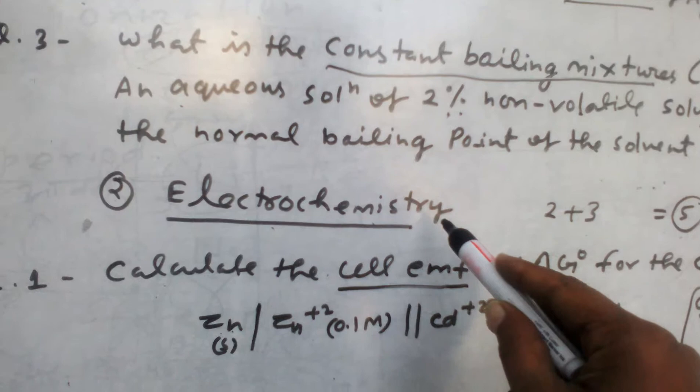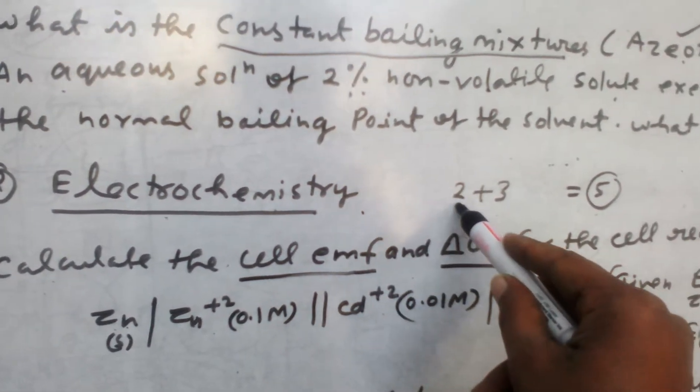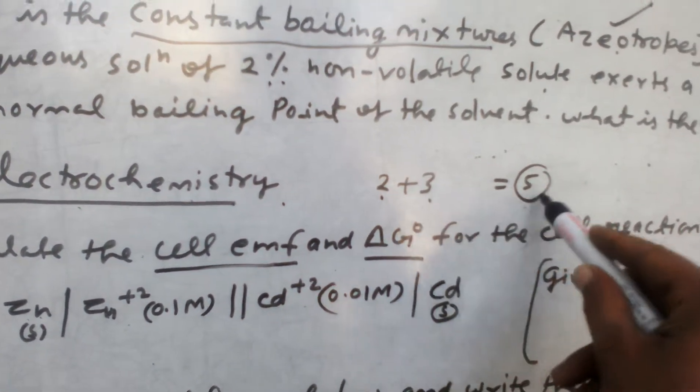Now we are going to electrochemistry, second chapter of physical chemistry. There will be two questions worth 2 marks and 3 marks, total 5 marks.